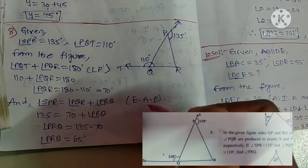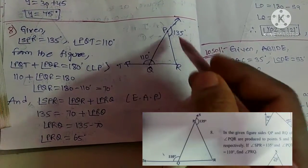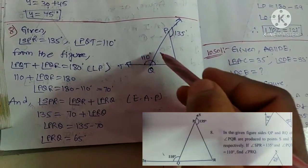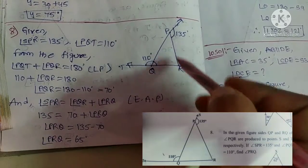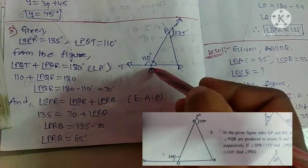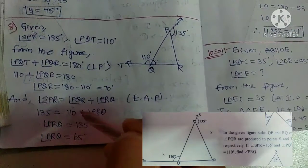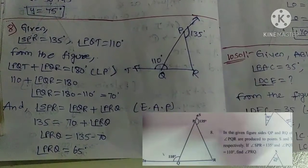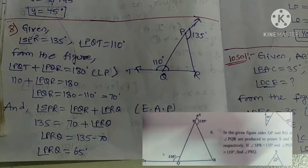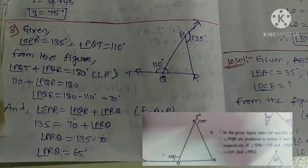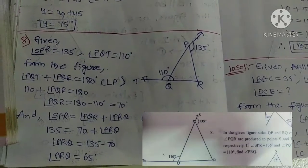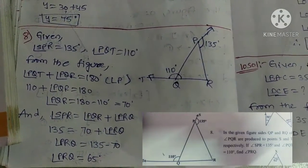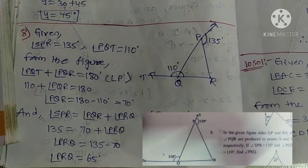Using the exterior angle property, the exterior angle equals the sum of the two interior opposite angles. So SPR equals PQR plus PRQ. Therefore 135 equals 70 plus PRQ, giving PRQ equals 135 minus 70, which is 65 degrees. Thank you for watching. Remaining problems will be explained in the next video.